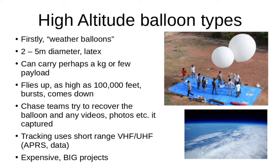There are two types of high altitude balloons. The first is weather balloons. They're made of a latex rubbery type of material, typically 2 to 5 metres in diameter. They can carry quite a large payload, perhaps even a kilogram or two, and they basically fly up and up. As they go up and the air pressure decreases, the latex continues to stretch without limit until eventually the balloon bursts and down it comes.